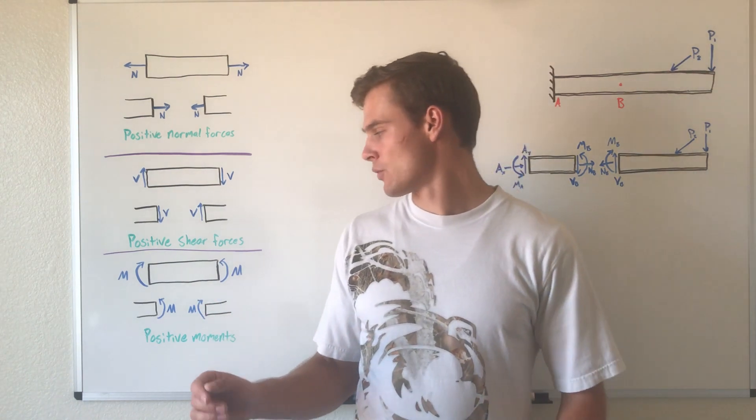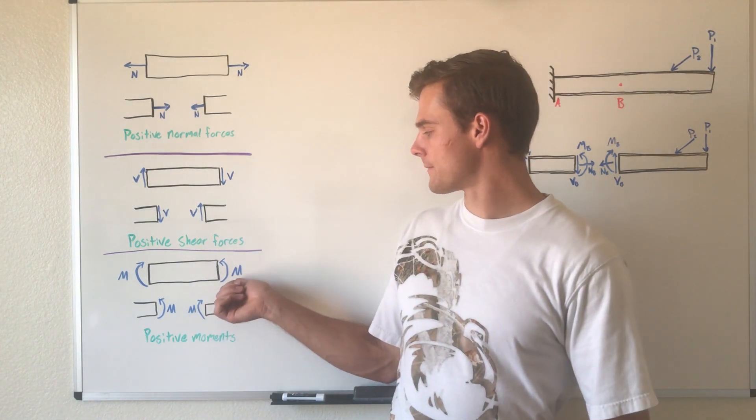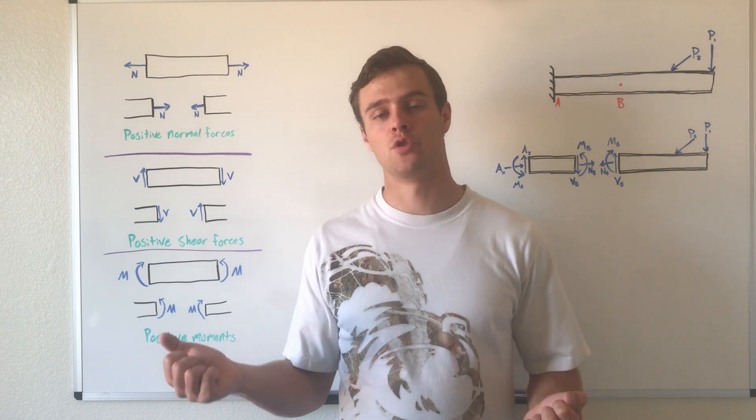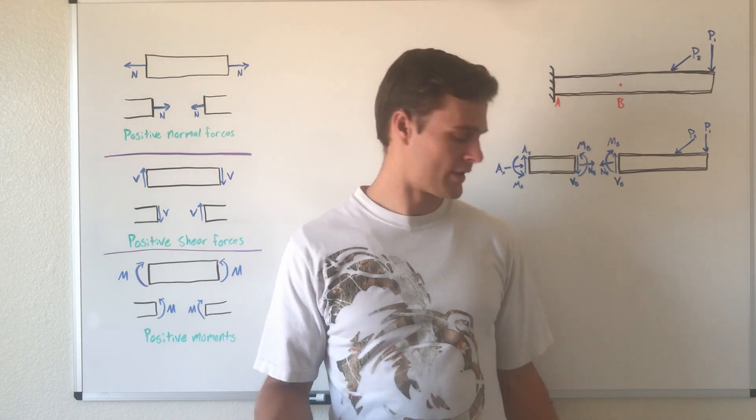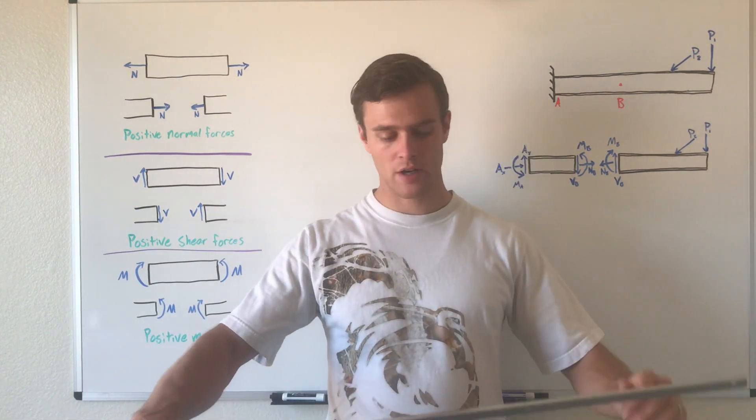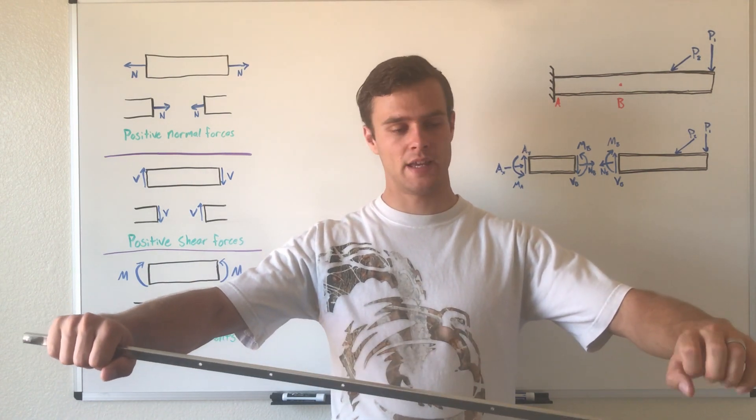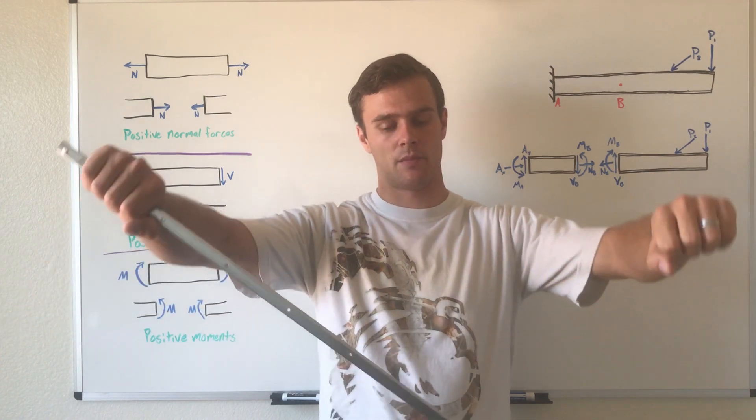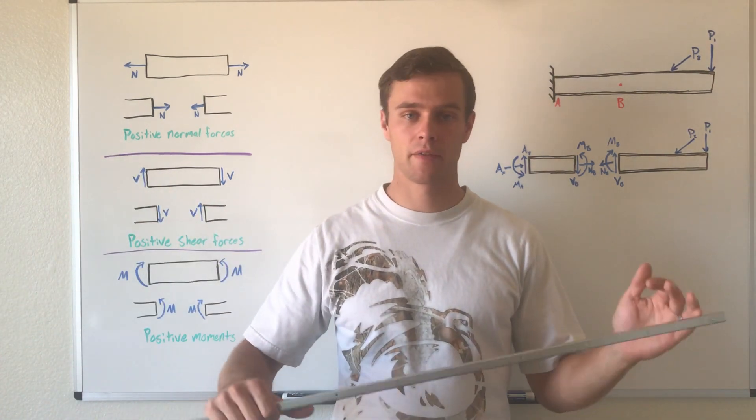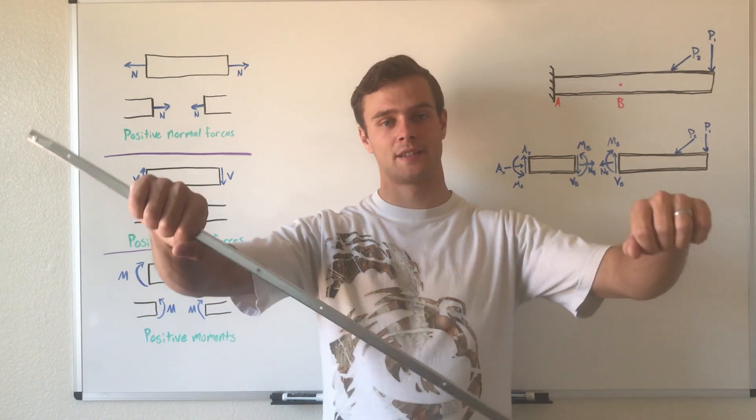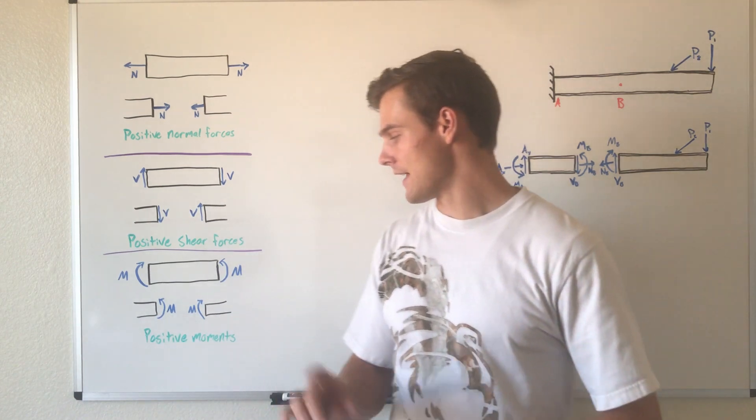A positive moment is when the moments cause the beam to concave upwards. If we were trying to bend this beam, we'd rotate it on the ends so it would concave up like this. If you want to think of it this way, that would cause a smiley face shape, and that's positive.